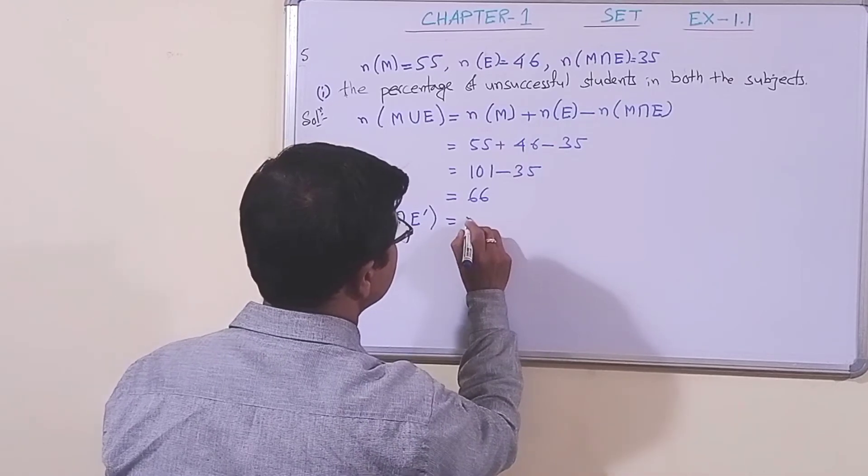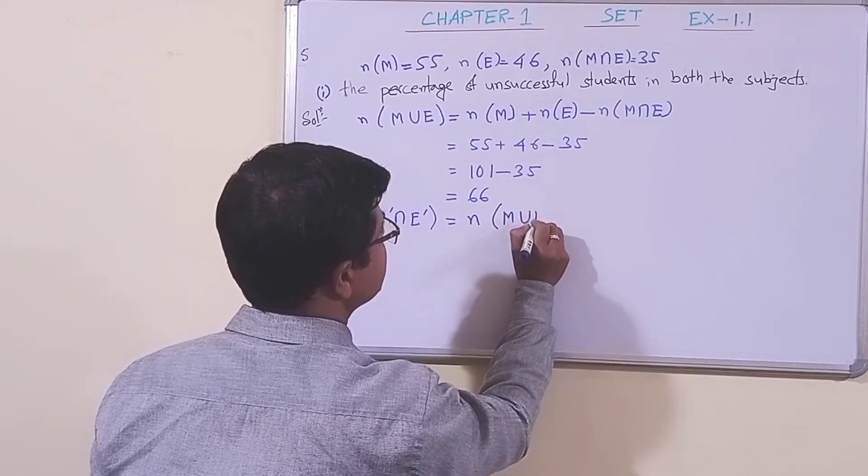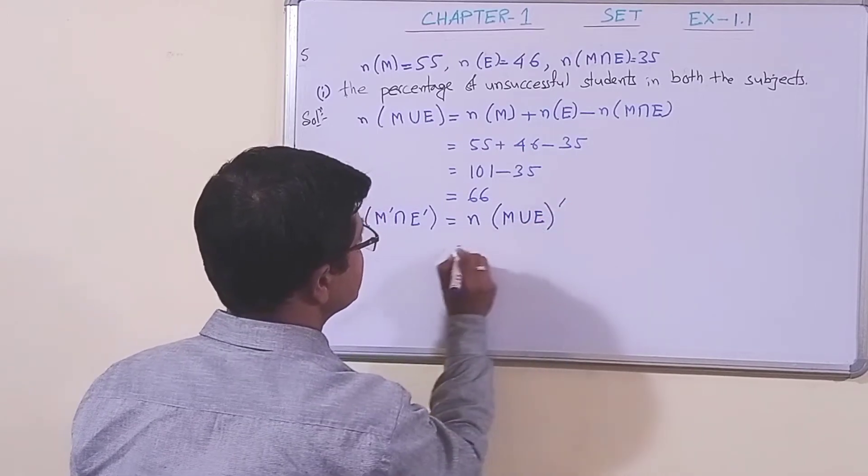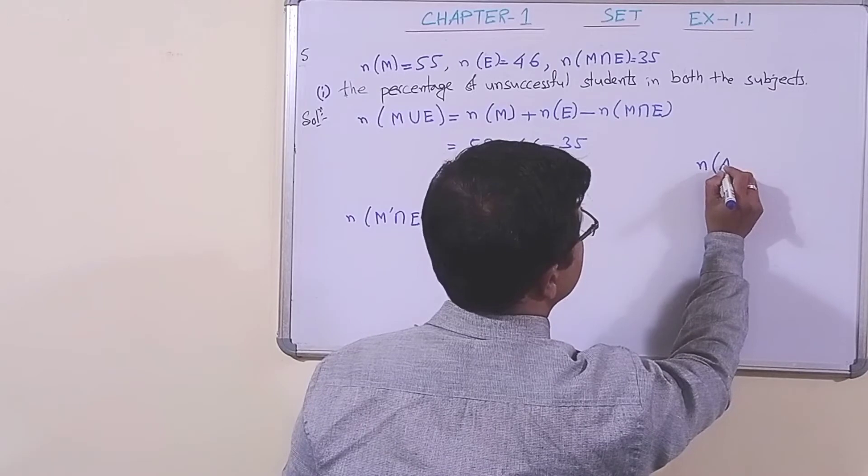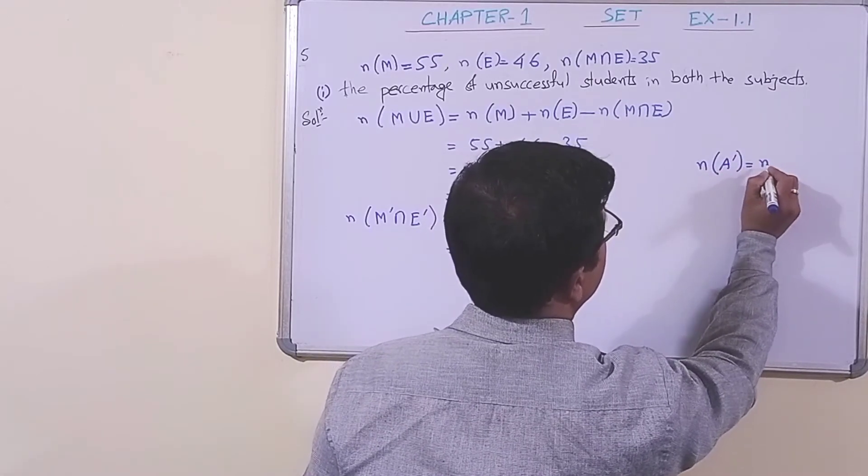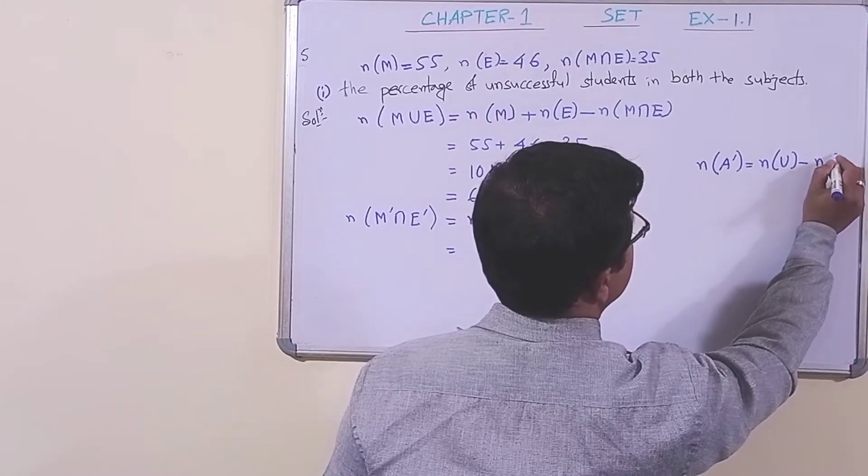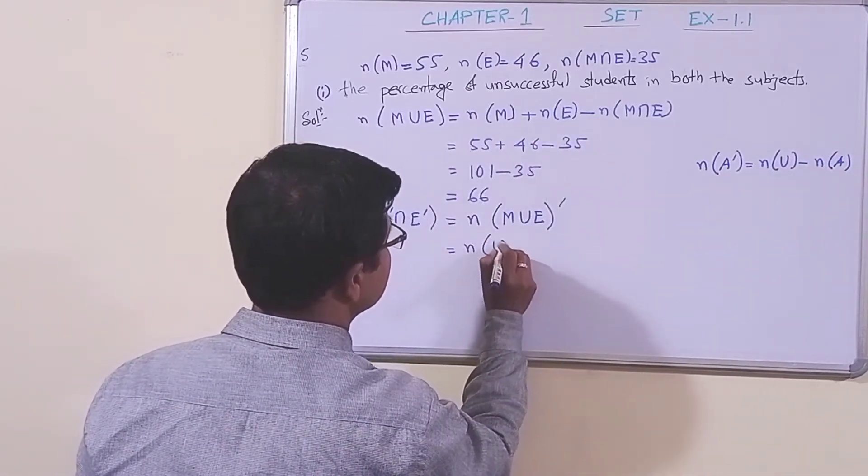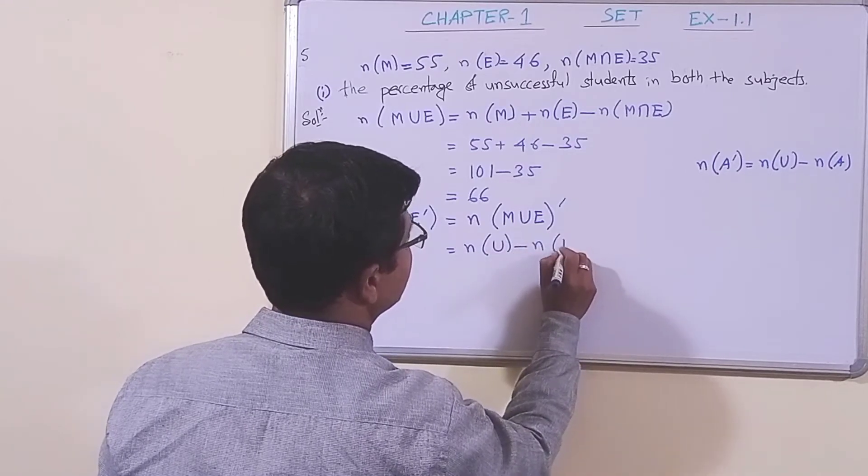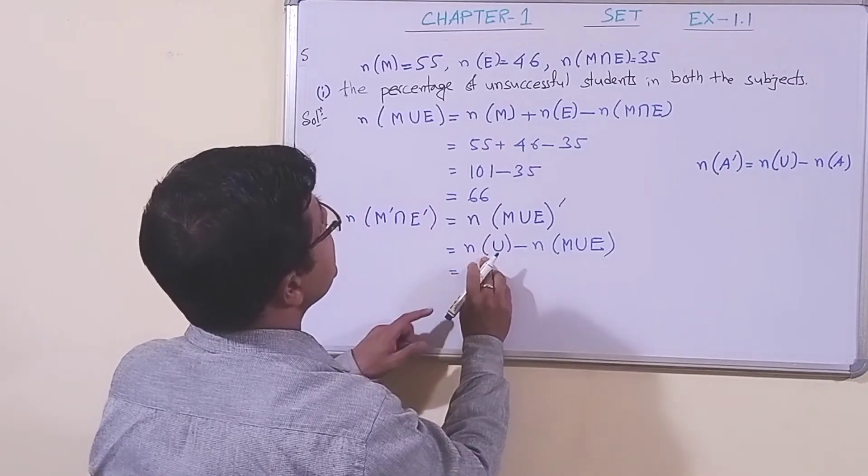Now, n(M'∩E') is equal to n(U) - n(M∪E). This is the same as n(U) minus n(M∪E). What is the value of n(U)?